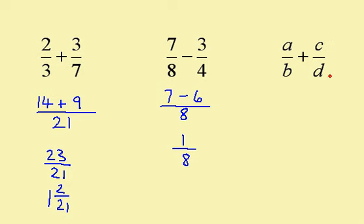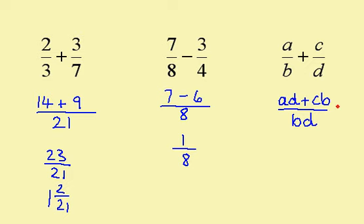On this one, the lowest common denominator is going to be BD. B goes into BD D times, so multiplying A by D gives me AD. D goes into BD B times, so multiplying C by B gives me CB, and I'm adding. So this is the answer for this one.